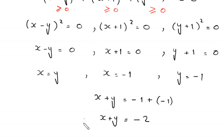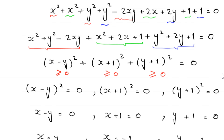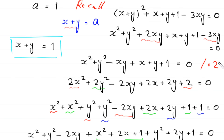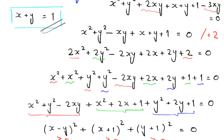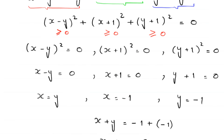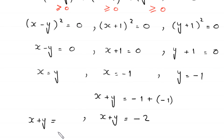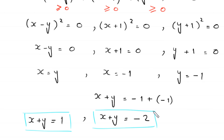And first we found the value of x plus y is equal to 1. So we have two solutions of this equation: x plus y equals 1 and x plus y equals negative 2.